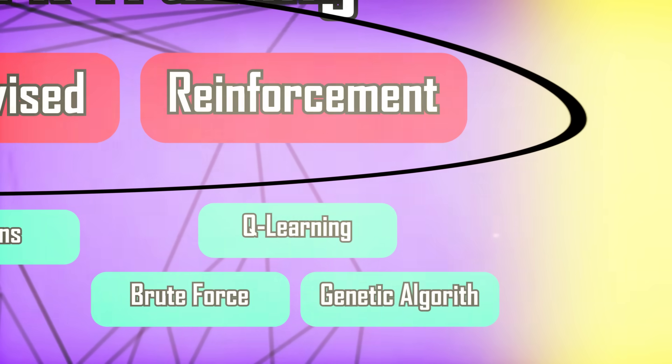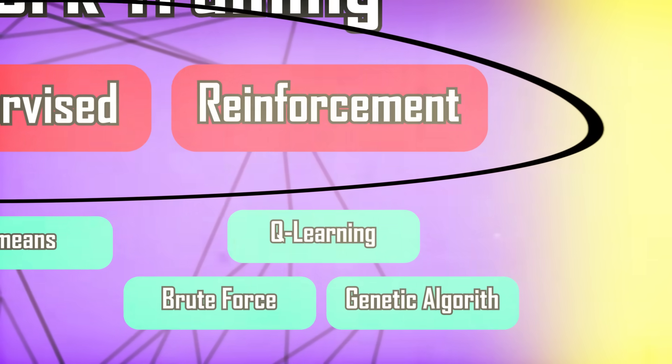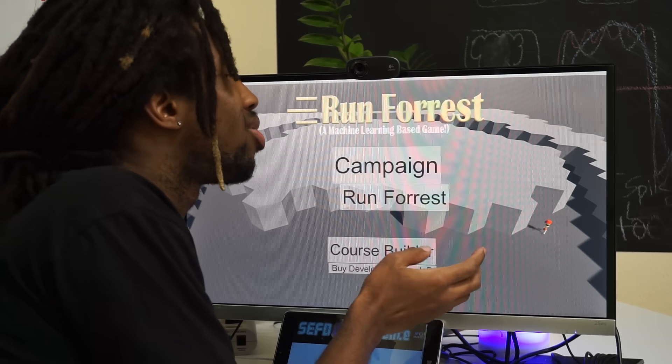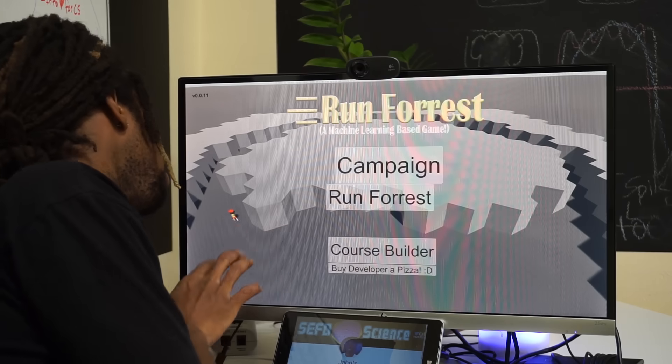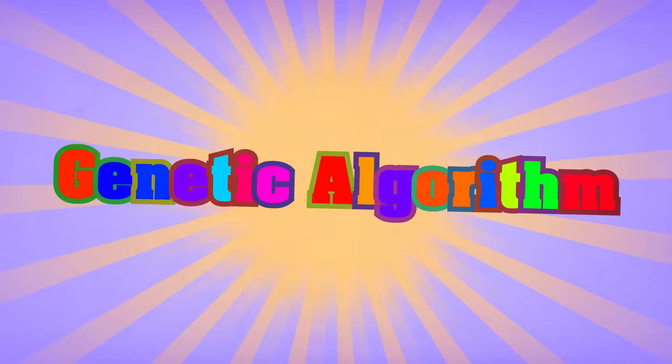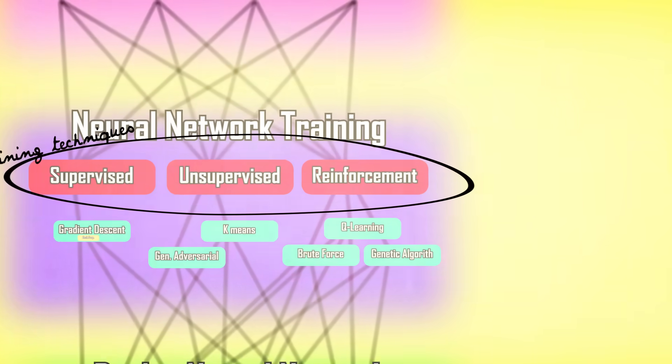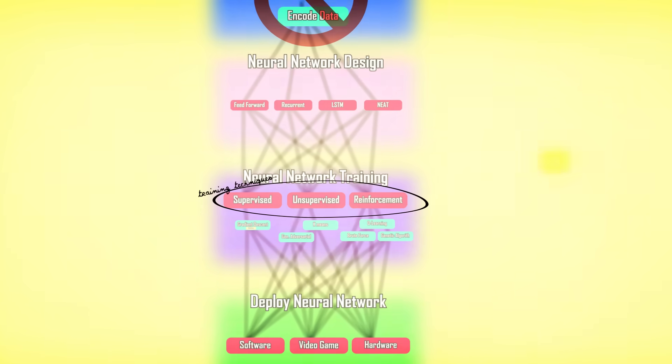There are a lot of algorithms that we can use with the reinforcement learning training technique. Because I'm already dying to start training Forrest, we're only going to explore the algorithm that we'll be using, which is called a genetic algorithm. Although not completely visualized here, it took me a very long time to understand neural networks until I was able to visualize this hierarchy. To all my visual learners out there, please do not take this visual for granted.